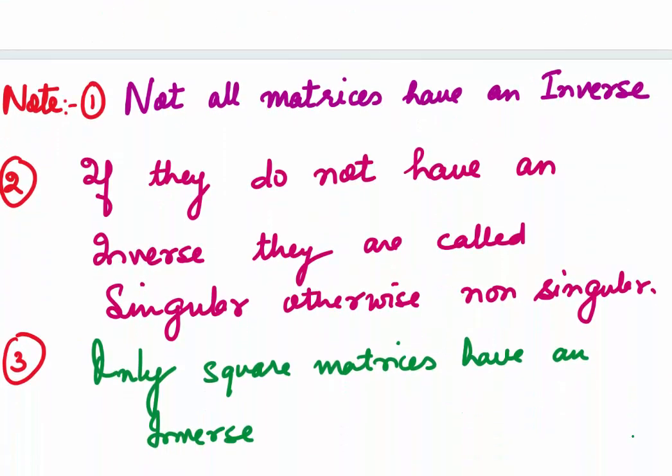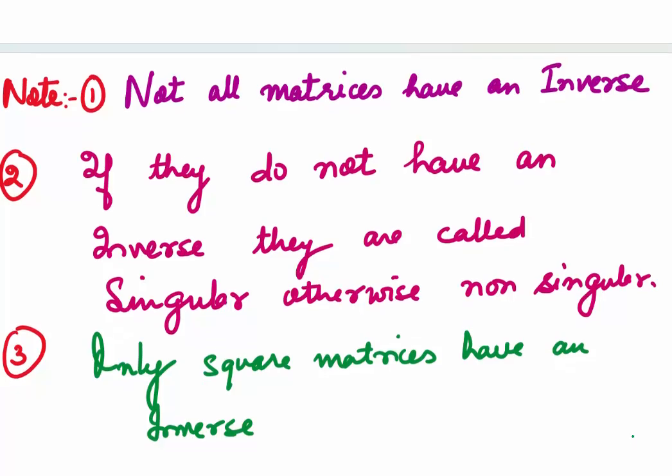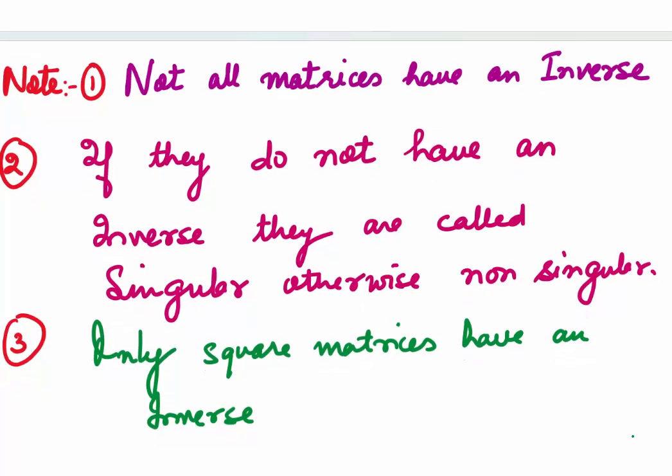A few things to note: not all matrices have an inverse. If they do not have an inverse, they are called singular. Otherwise, they are called non-singular. So in other words, only non-singular matrices have an inverse. And another thing to remember: only square matrices have an inverse.